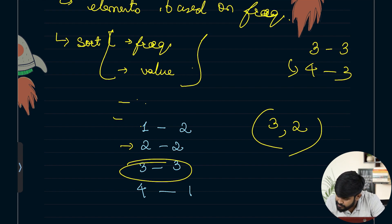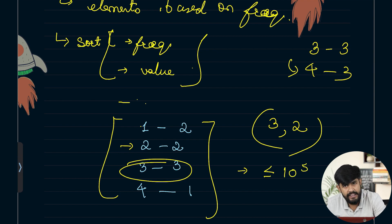So we can have something like this. If the values are less than or equal to 10 to the power 5, we would be using an array for hashing. Else we can simply use a map to hash the values. So this can be done.